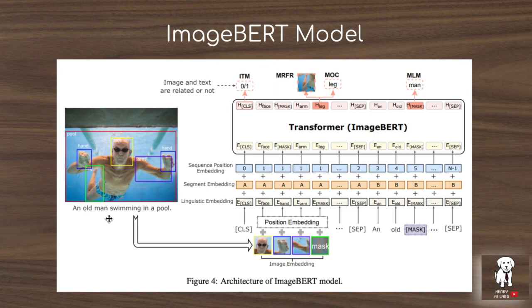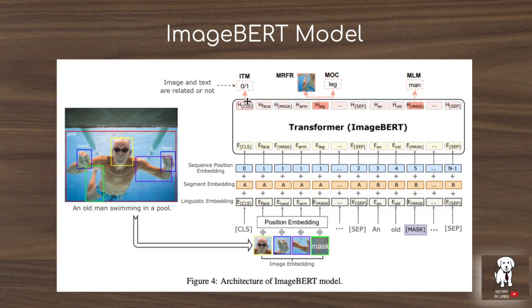The ImageBERT model predicts whether the image and text are related or not. For example, 'an old man swimming in a pool' paired with a matching image is a positive example, while text like 'a horse on a farm' for that image would be a negative example. This negative sampling task structures the output of the transformer, which processes the combined visual and word token sequence through attention and produces an output where the CLS token is sliced and sent to the image-text matching task.